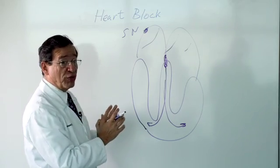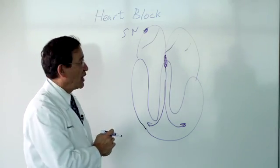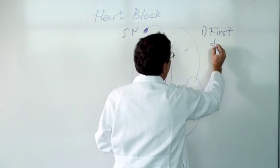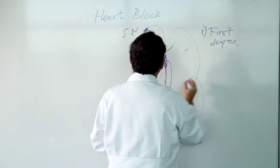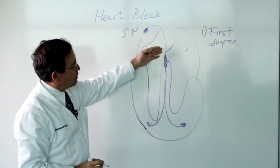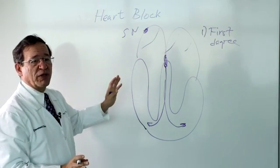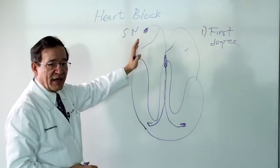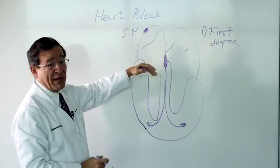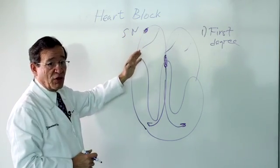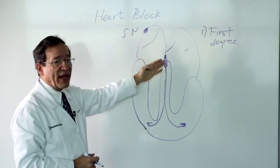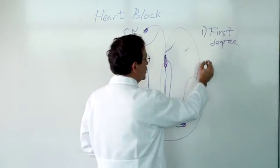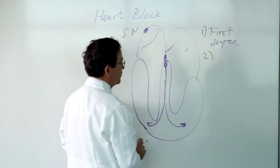There are various degrees of heart block. What we call first degree means that this electrical impulse goes through the bridge but it's slower than usual. So it takes a little longer than the quarter of a second that I mentioned before and it may take actually half a second sometimes. So there's delay in the impulse getting down to the lower chamber but nevertheless it gets down there. This is a more benign problem.